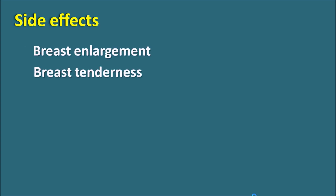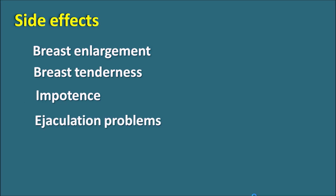All side effects of dutasteride are related to the reproductive organs. It can produce breast enlargement and breast tenderness. It can also produce impotence and ejaculation problems, including failure of ejaculation. Loss of libido and reduced sexual desire are also observed. Apart from these hormonal side effects, it can also produce testicular pain, dizziness, and lightheadedness.